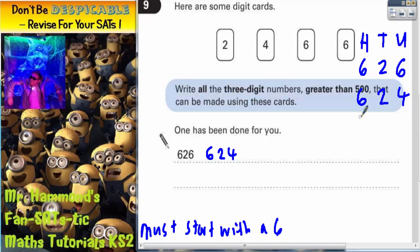So now let's try 640 something. We could have 642. Or we could have 646 using the other 6. So 642 or 646.